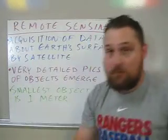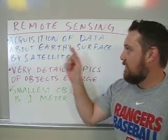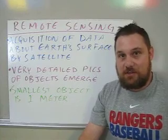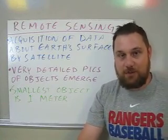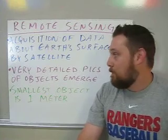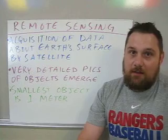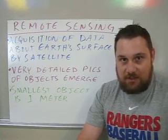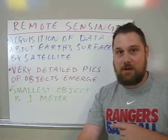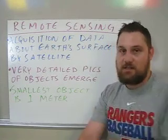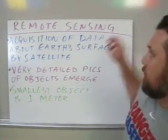Another geographic tool used by governments and organizations is remote sensing — the acquisition of data about the earth's surface using satellites, taking pictures and measurements of things on the earth. You can get extremely detailed pictures, and the smallest object detectable by remote sensing is basically the size of a square meter, which is about three feet by three feet.